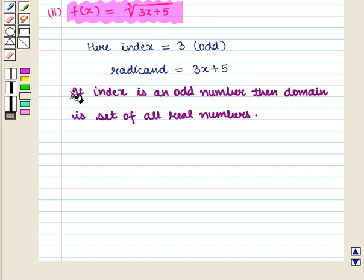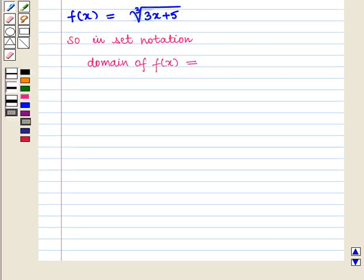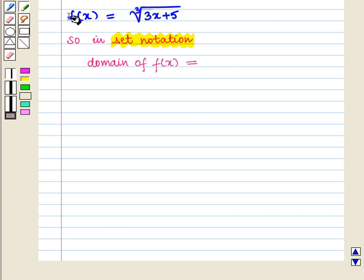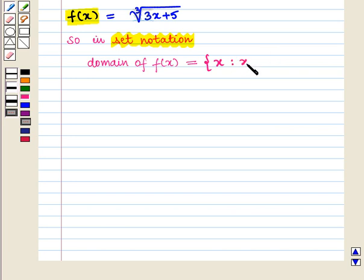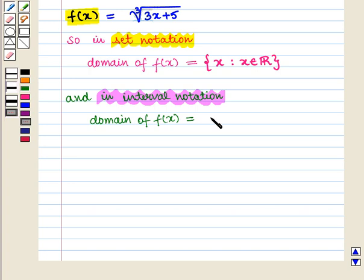We know that if the index is an odd number, then the domain is the set of all real numbers. Since the index is equal to 3, which is an odd number, in set notation the domain of f of x will be equal to the set of all x such that x belongs to the set of real numbers. In interval notation, the domain of f of x will be equal to the open interval from minus infinity to infinity.